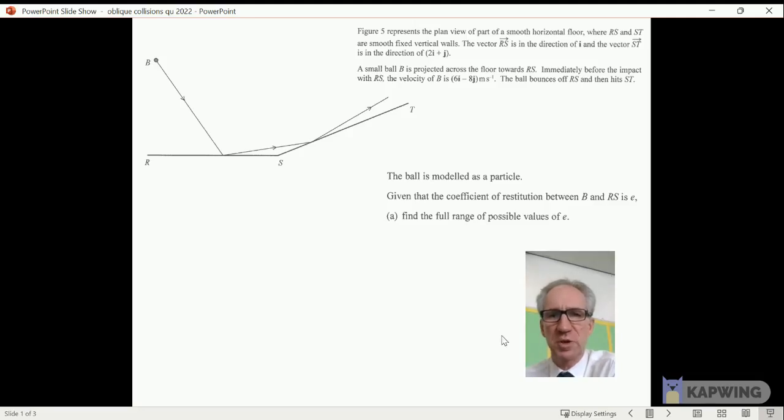Right, Further Maths mechanics, last question on the paper. It's about collisions with two walls, but it gives the position of this wall as a vector rather than in angles. We've got a ball bouncing, hits the wall, goes off here, tells you the initial velocity of B, and then it bounces off here and hits ST. We've got to find the full range of e, the coefficient of restitution. Now e needs to be small enough so that this is going at a shallow enough angle to hit the wall. If it goes off steeper, it'll be sort of parallel to ST so it won't hit.